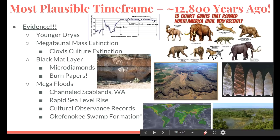And finally, I want to wrap up my overall presentation with the evidence of mega floods that were created as a result of the impact event — not just the initial impact on the ice sheet, but also the secondary melting of all the ice and slush that got slung out and created the Carolina Bays. All that water had to go somewhere, and the evidence is still here waiting for us to rediscover it.